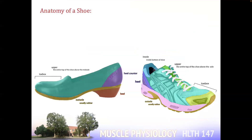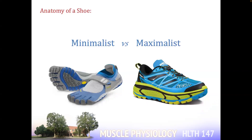Shoes change our mechanics. Our contact with the ground changes. Looking at the anatomy of a shoe, the components that impact the mechanical behavior of a foot are the sole and the heel, the upper and the toe box. You need to know the difference between minimalist and maximalist footwear. The minimalist shoes have a thin, flexible sole, just attempting to let your feet recreate natural interactions with the ground.